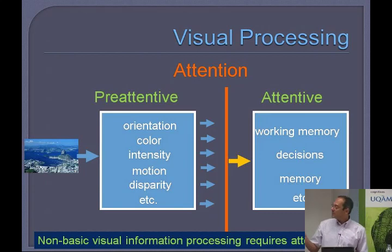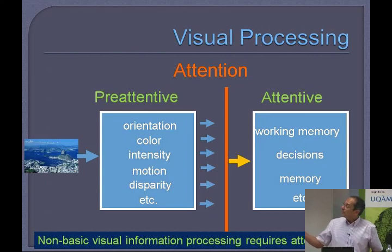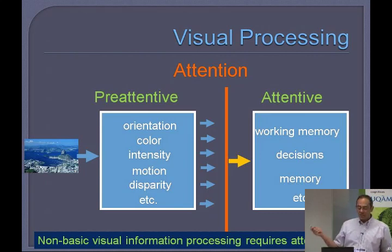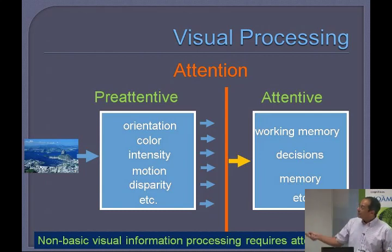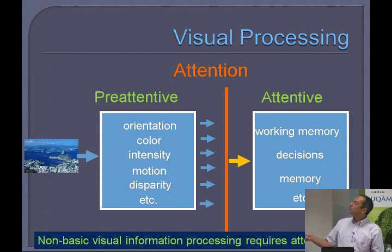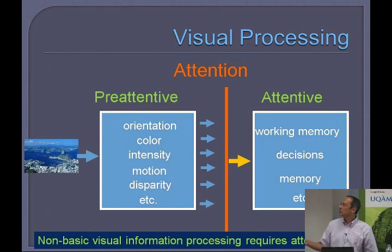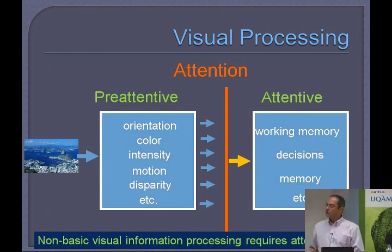This can be summarized by a model that was quite prevalent, in which there would be a pre-attentive stage processing relatively basic features such as orientation, color, and intensity. But only after you pass this attentive gate would you get into attentive processing, where you'd be able to maintain information in working memory, make perceptual decisions, and shift things into long-term memory.